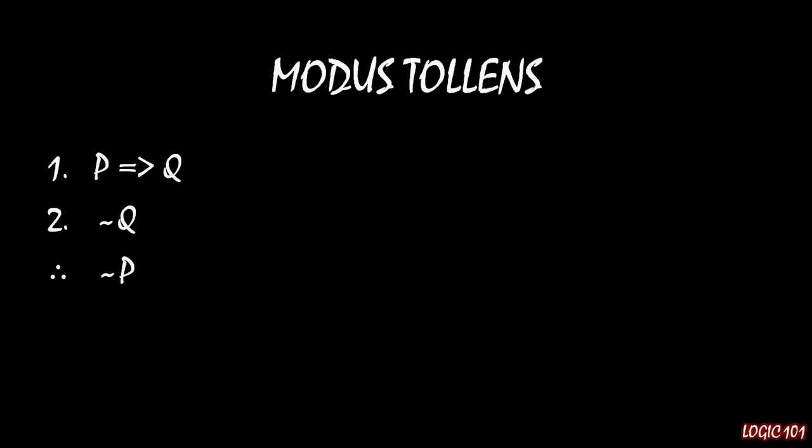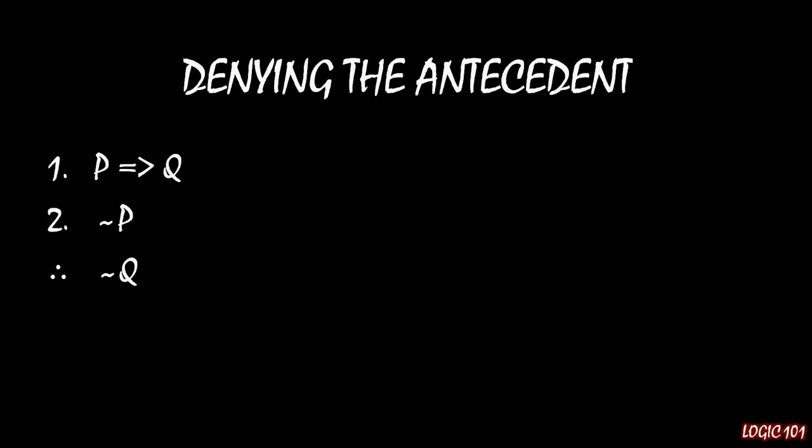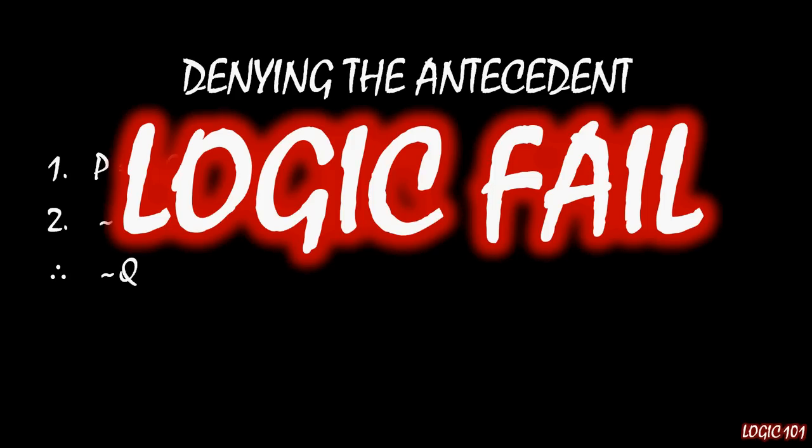What you can't do is make the following minor modification. Rather than have your second premise be not q, you make it not p, and you use that information to conclude not q. We call this denying the antecedent because we have the negation — the denial — of the antecedent in line 1. Line 2 is the denial of p, and p is the antecedent of the implication in line 1. If you try pulling this, it doesn't work. This is a logic fail. This is a formal fallacy.